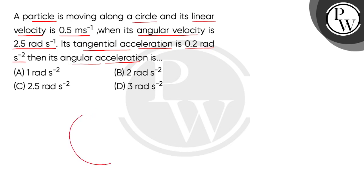We are given a particle which moves along the circle's circumference. The linear velocity V is 0.5 meter per second, and its angular velocity is 2.5 radian per second.